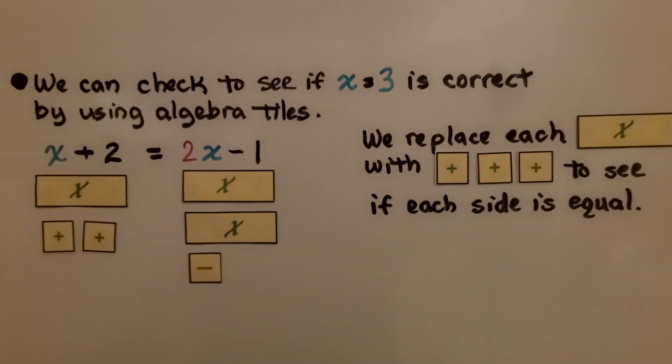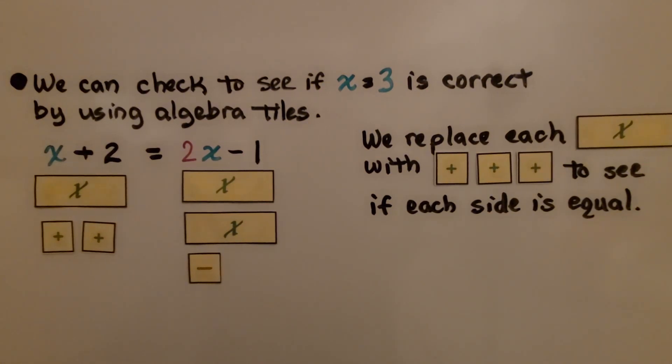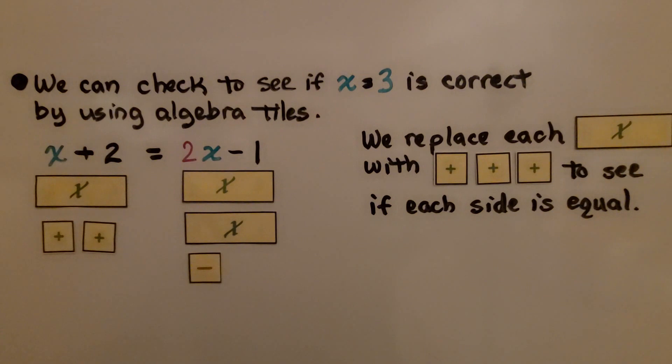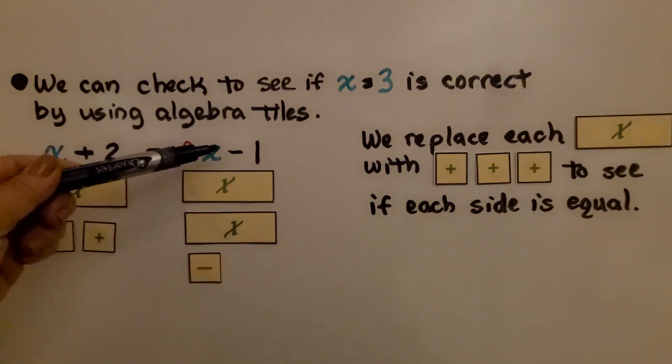We can check to see if x equals 3 is correct by using algebra tiles. We have our x plus 2 equals 2x minus 1, our original equation.